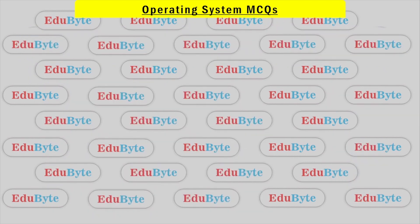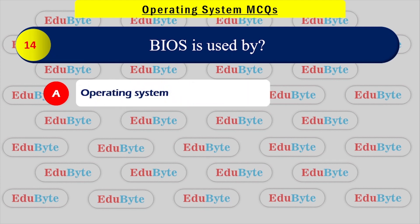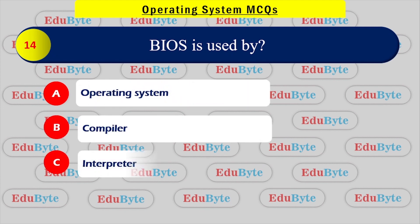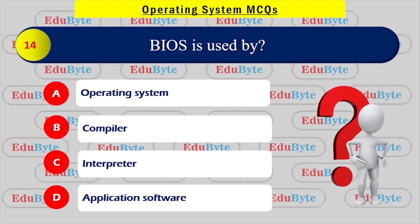BIOS is used by which of the following? Options: Operating System, Compiler, Integrated software, Application software. BIOS stands for Basic Input Output System and is used by the operating system.